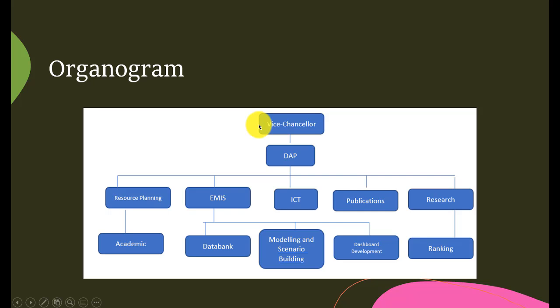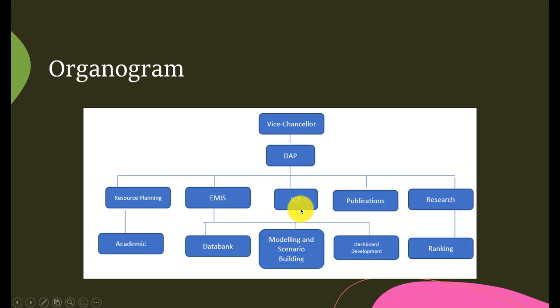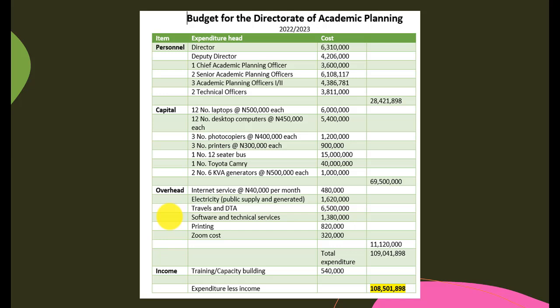The number of indicators may increase or decrease, but this is what we have at the moment. What organogram can help us do this? The organogram I'm proposing to fit the new proposed role of the Directorate of Academic Planning includes: a resource planning unit, an Education Management Information System unit with subunits for data bank, modeling and scenario building, and dashboard development. There must also be an ICT section, a publication section, and a research section dealing with ranking and other issues.